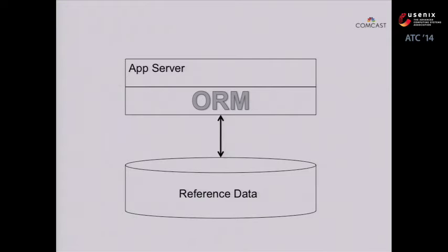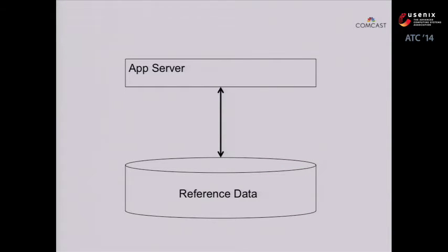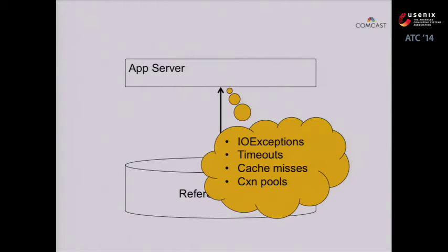Anybody who's ever tried to tune the queries in production that one of these ORM layers generates might actually expand that acronym to "obscuring the real mechanism." Either with or without the ORM layer, our application developers have to spend their time thinking about the various failure scenarios that happen here — timeouts, exceptions, cache misses, connection pool settings. These are all things that you have to pay a lot of attention to to build a robust production service, but they are easy to forget and hard to get right. A lot of the effort here has nothing to do with the reference data set and certainly doesn't have very much to do with the application logic that we're trying to provide.